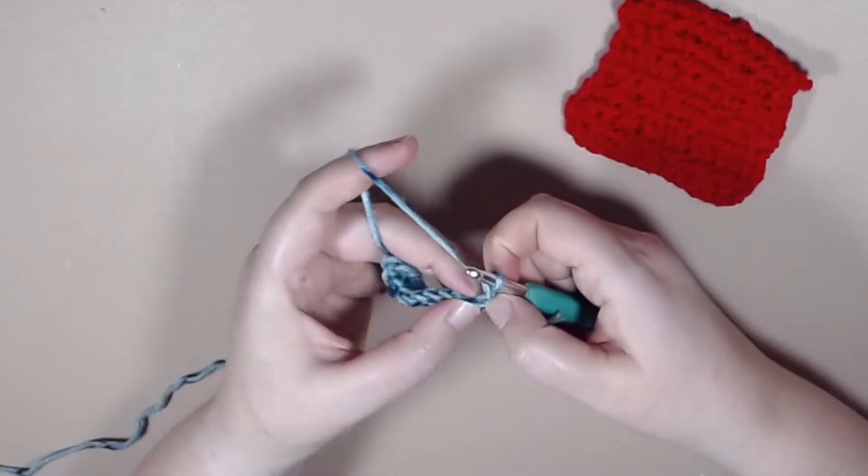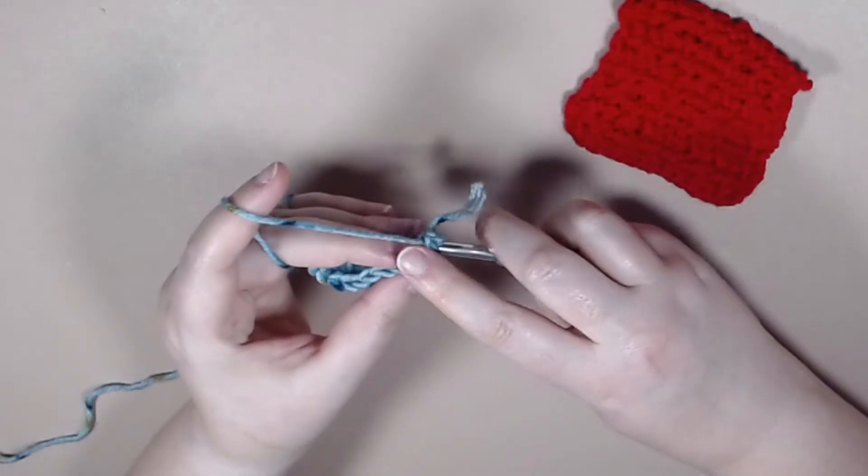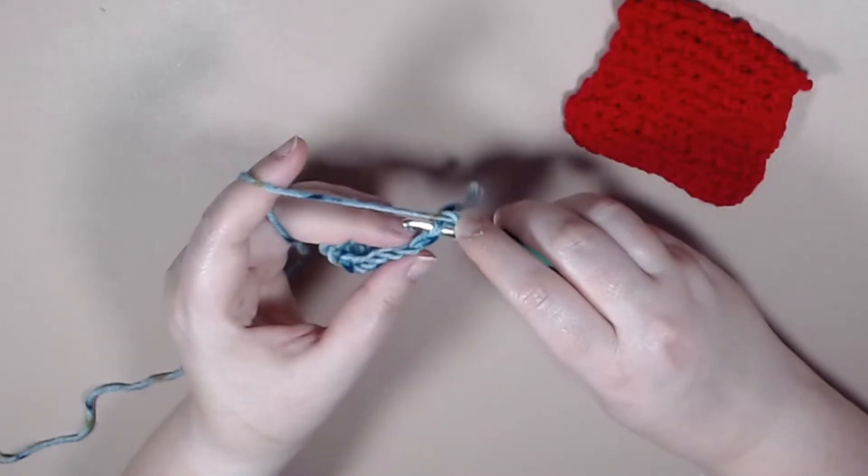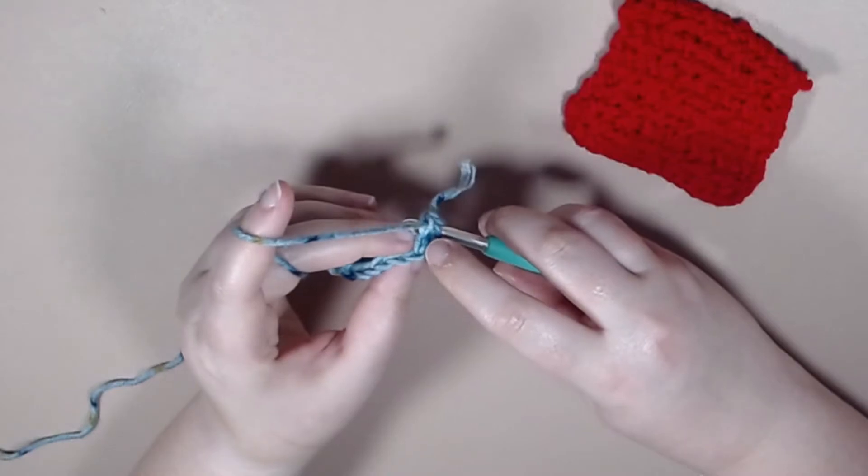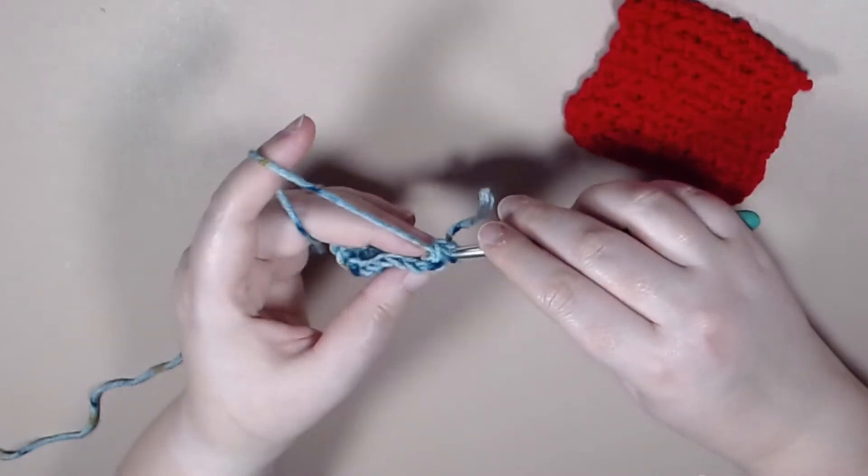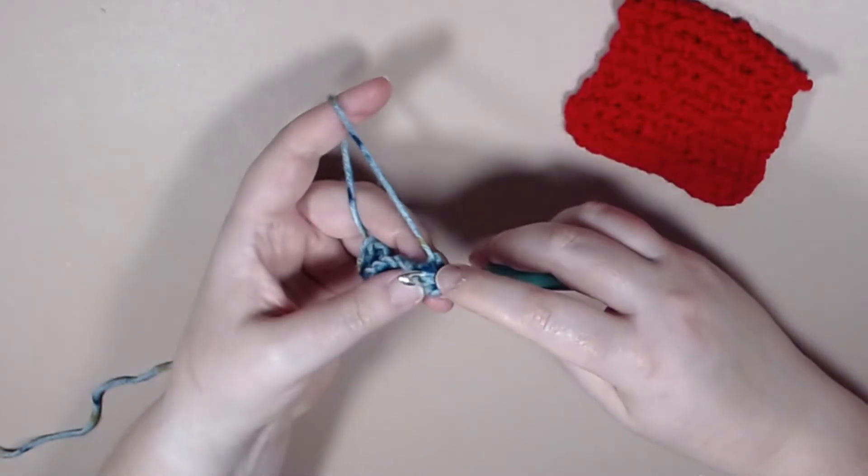Which means we're going to locate where our first stitch is at, we're going to go through the front, and then we're going to go through the next stitches back. Like so. And now we have our post.